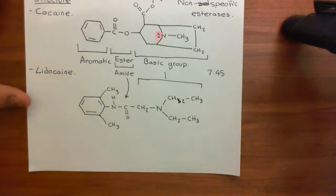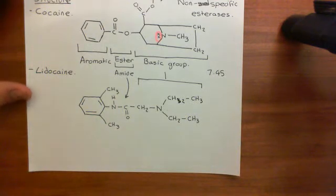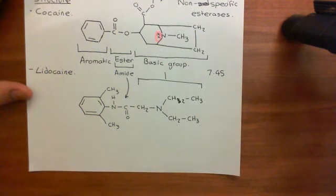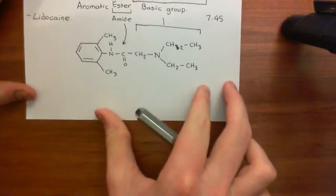We'll call it there for this video, and in the next video what we'll do is finally turn our attention to the mechanism by which these drugs selectively block neurons which are firing too rapidly. They have a preference for neurons firing too rapidly and will completely silence those neurons, because pain neurons - the nociceptors - will generally be firing action potentials extremely rapidly.